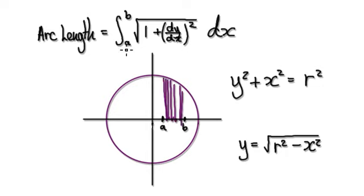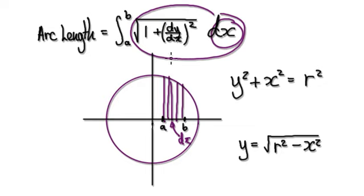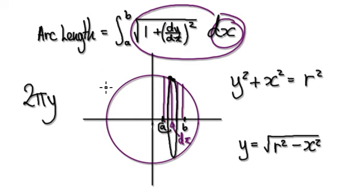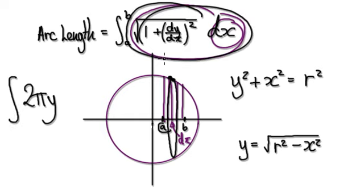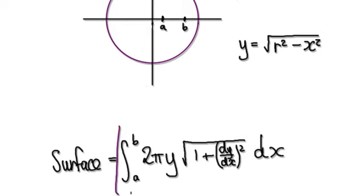We're summing up everything from a to b. You start out with your dx, combine it with this, and then you will get your arc length. Once you've got your arc length, times 2πy — that will give you your circumference for one strip. And then you've got to sum up everything, meaning you've got to introduce an integral. The arc length here was just for one particular strip, so now you've got to sum up everything. Your surface area will be given by this.